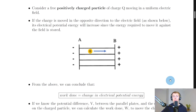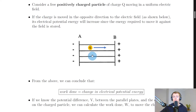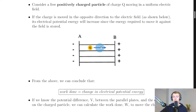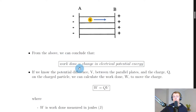We're now going to look at work done on the charged particle in more detail. Consider a free positively charged particle of charge Q moving in a uniform electric field between two plates A and B, where B is positively charged and A is negatively charged. If the charge is moved in the opposite direction to the electric field — the field lines point from positive to negative, to the left — so if our charge moves to the right against the electric field direction, its electrical potential energy will increase since the energy required to move it against the field is stored. Therefore, the work done on the charged particle equals the change in electrical potential energy.